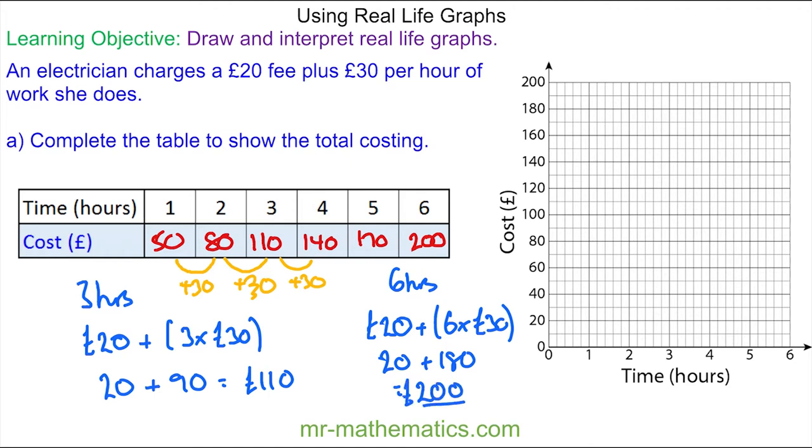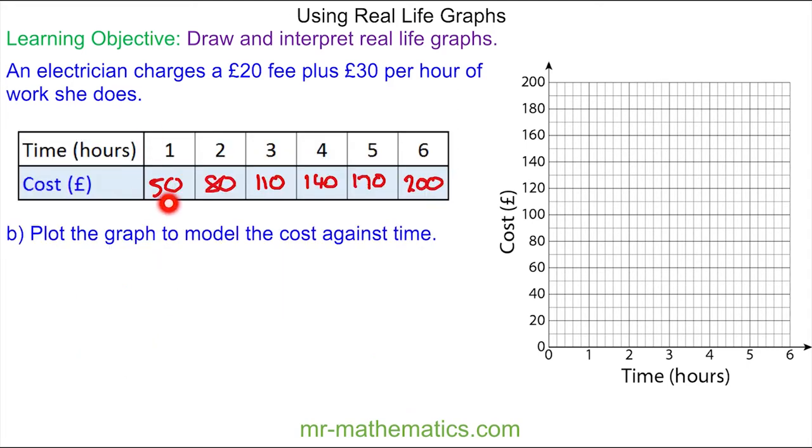So now we're going to model this relationship between time and cost on a graph. You can see that when we have a time of one hour, we have a cost of £50. So we plot this point here, a time of one hour and a cost of £50.